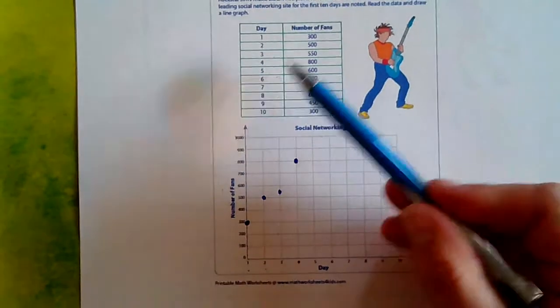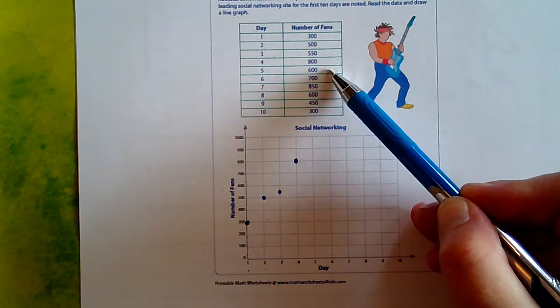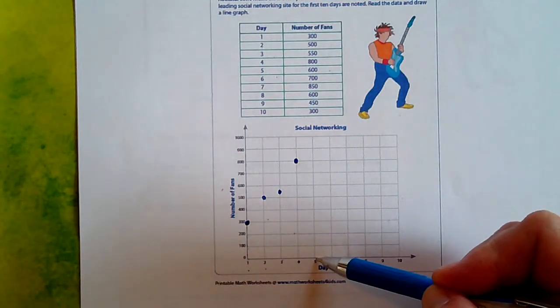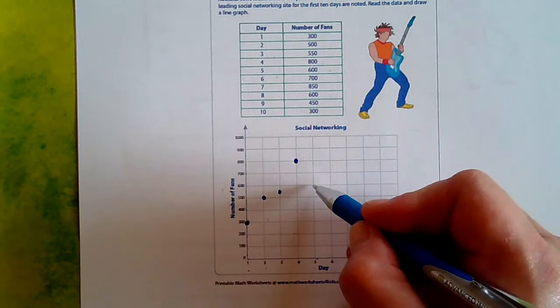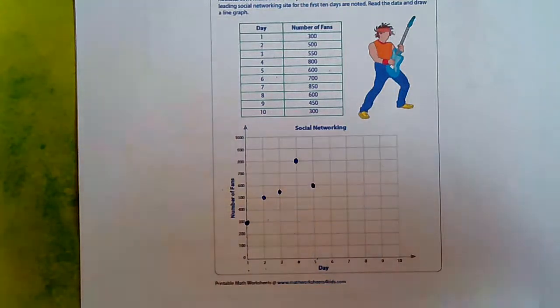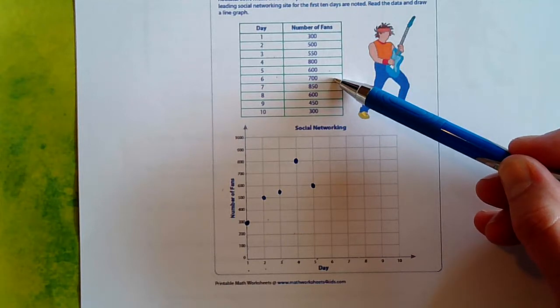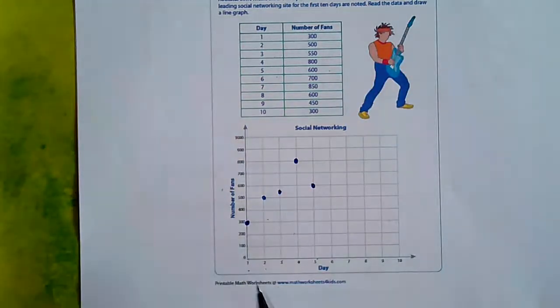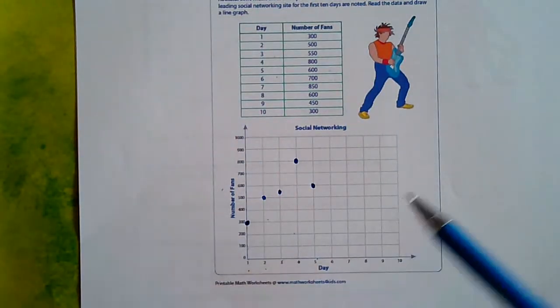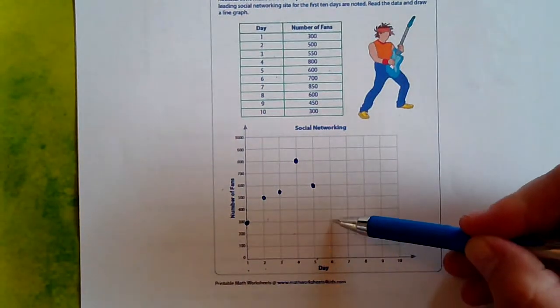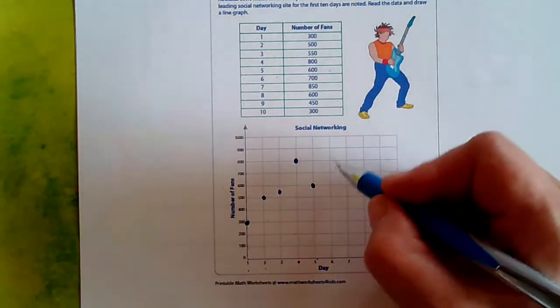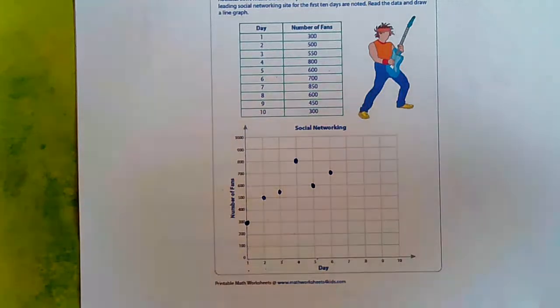On day five, Jim had 600 fans. So day five, he dropped a little bit. But we're going to go to 600. On day six, he grew again, and he had 700 fans. So we're going to go over to day six, and we're going to climb this line until we get to 700. Right. There's our point.